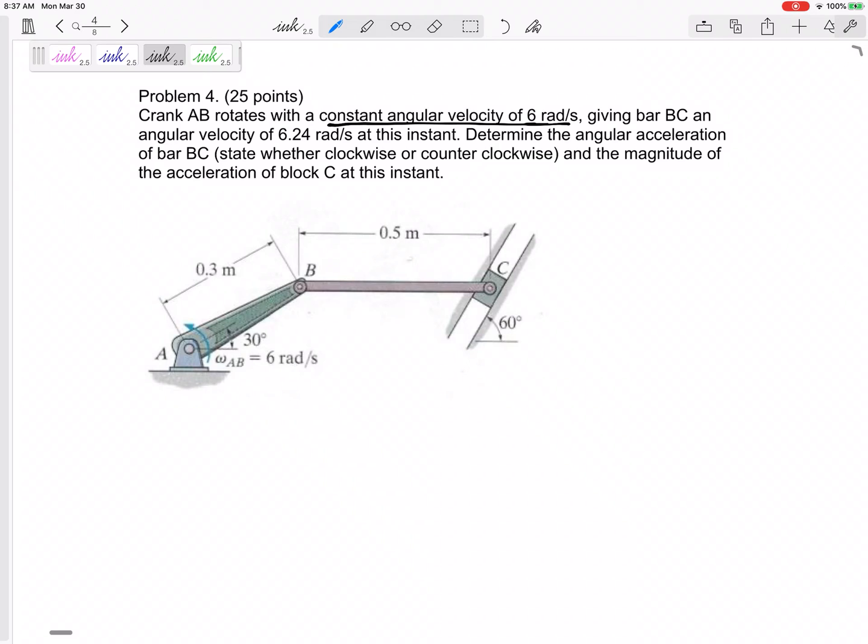For the usual way I give tests in class, I am going to give you this right here so that this problem, I'm just testing you on the acceleration part of this problem. But see if you can calculate that. Double check me, make sure I'm right, that you would get the angular velocity of 6.24. You could get that using the relative velocity method or the instantaneous center of zero velocity method.